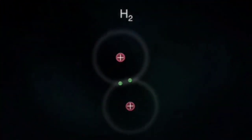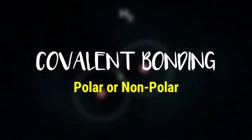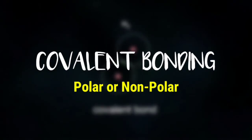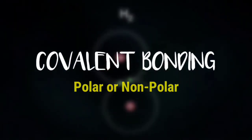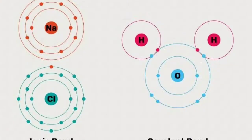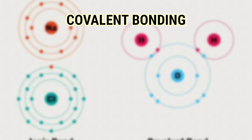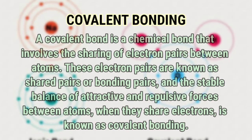Hello. In this video you will learn about covalent bonding and how to determine if it's polar or nonpolar. A covalent bond is a chemical bond that involves the sharing of electrons.